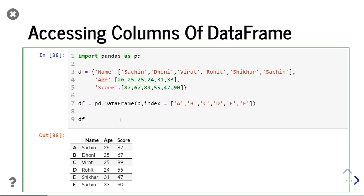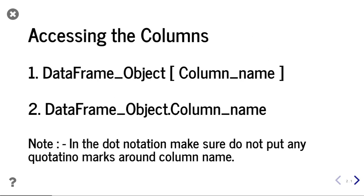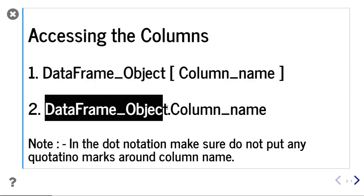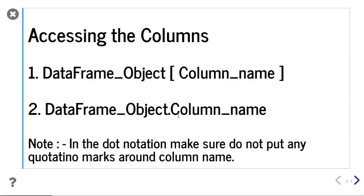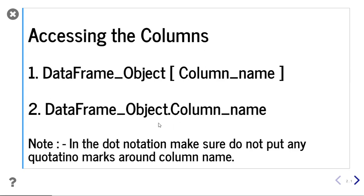So let us get started with accessing columns. There are two types using which you can access columns of a data frame. The first way is you will provide the column name in the square bracket. That column name can be a list of columns or a single column, so using the first type you can access a single column or any number of columns. The second type is a dot notation format, where you give a dot and the column name. In this way, you will be able to access only a single column.